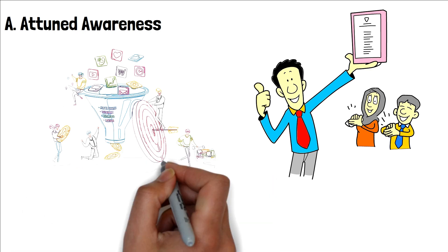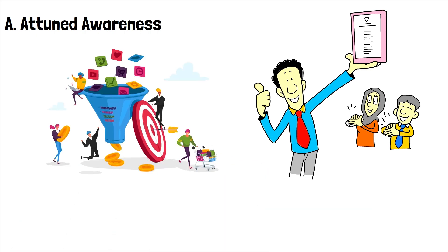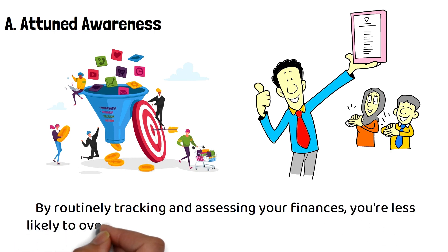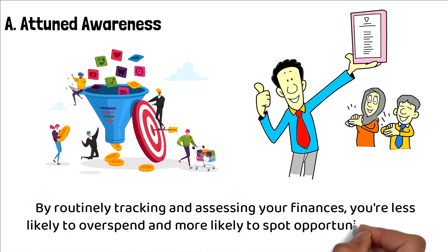Start with a clear understanding of your income, recurring bills, discretionary expenses, and overall financial health. By routinely tracking and assessing your finances, you're less likely to overspend and more likely to spot opportunities to save.